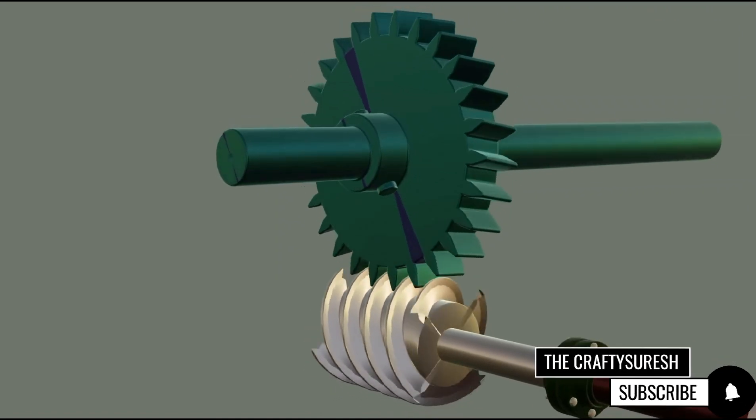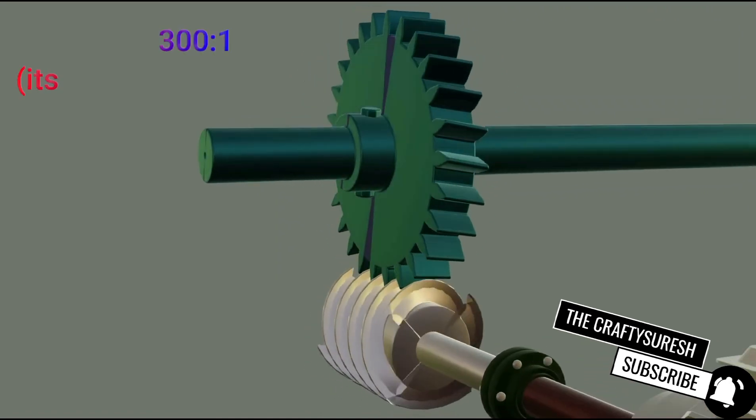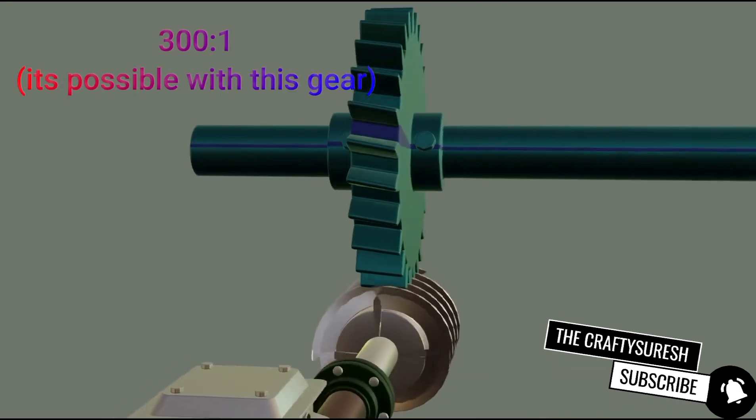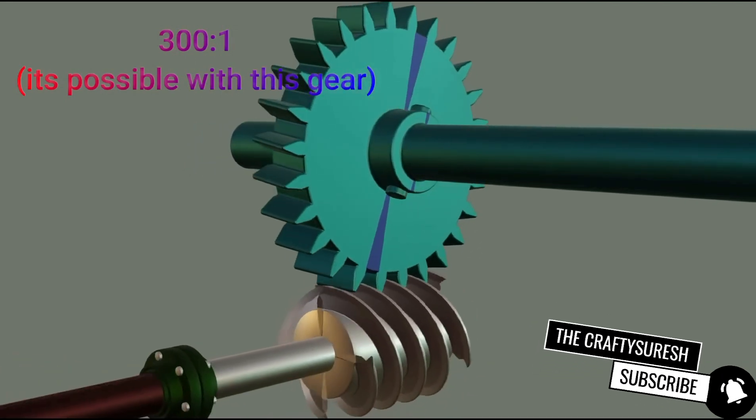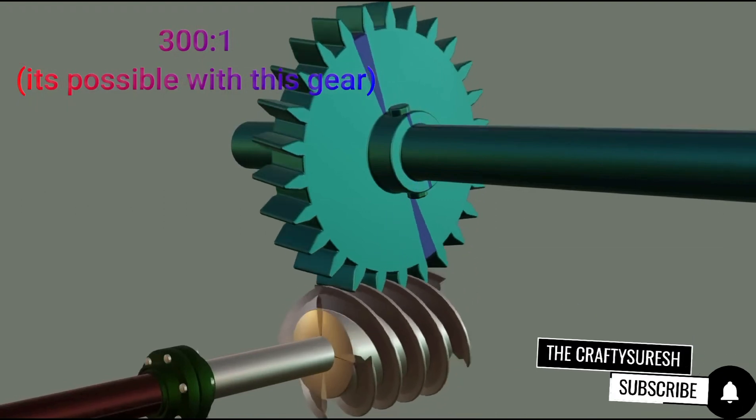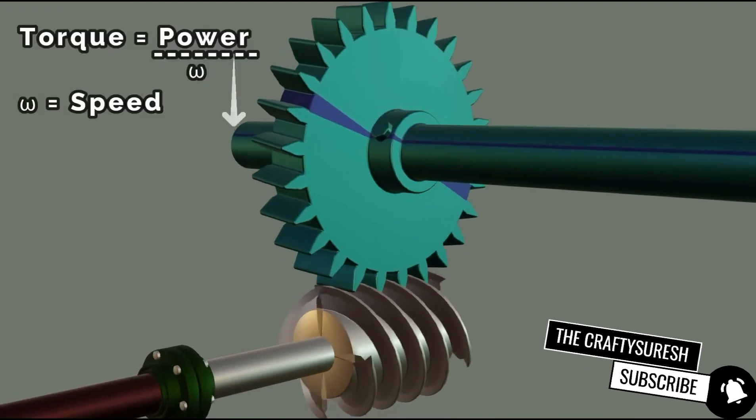First of all, this gear reduces the speed a lot. The gear ratio can be 300 into 1 which means when worm completes 300 rounds, it will complete 1 round. The biggest advantage of this is that when the speed is reduced so much, we get a lot of heavy torque.